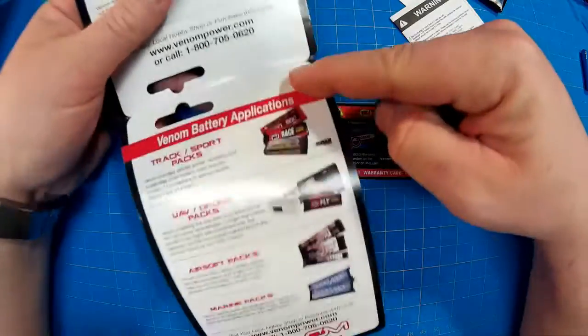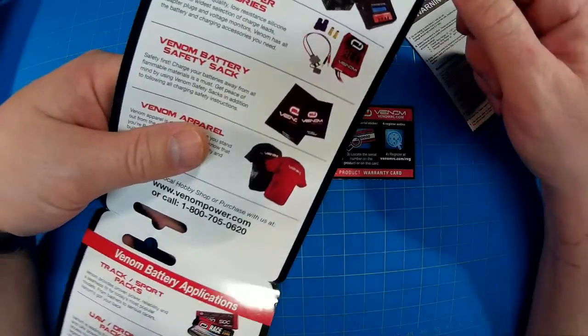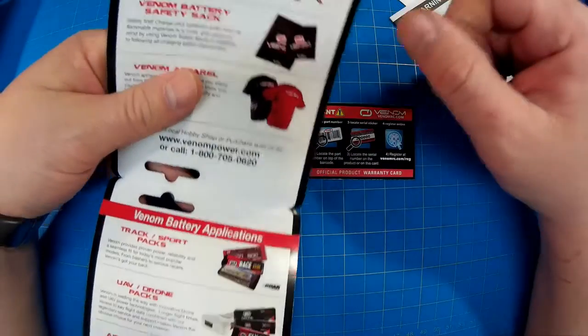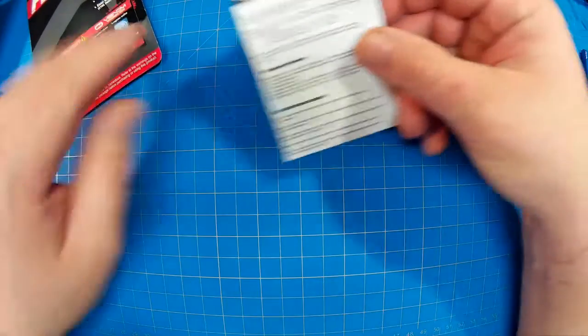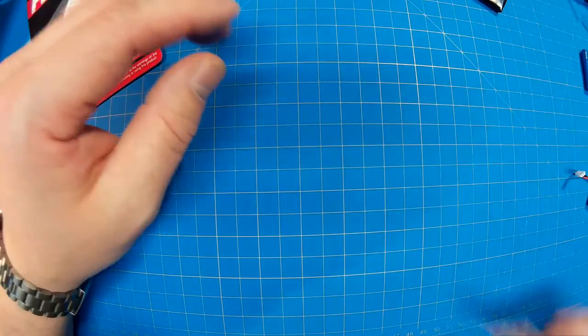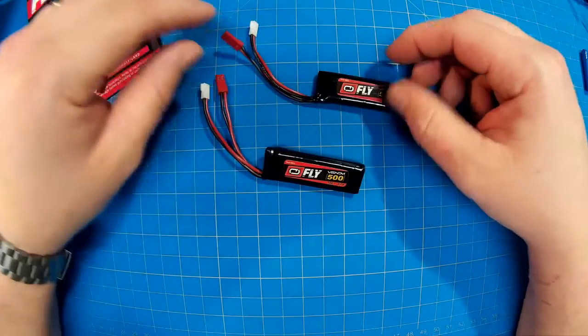But the packages come pretty nice. They've got this fold out and they show you the different products that they sell. And they've got chargers and swag of various sorts. And then you've got your registration card and the obligatory warning. And some stickers, which, you know, that's cool. Stickers can always dress something up that looks boring.